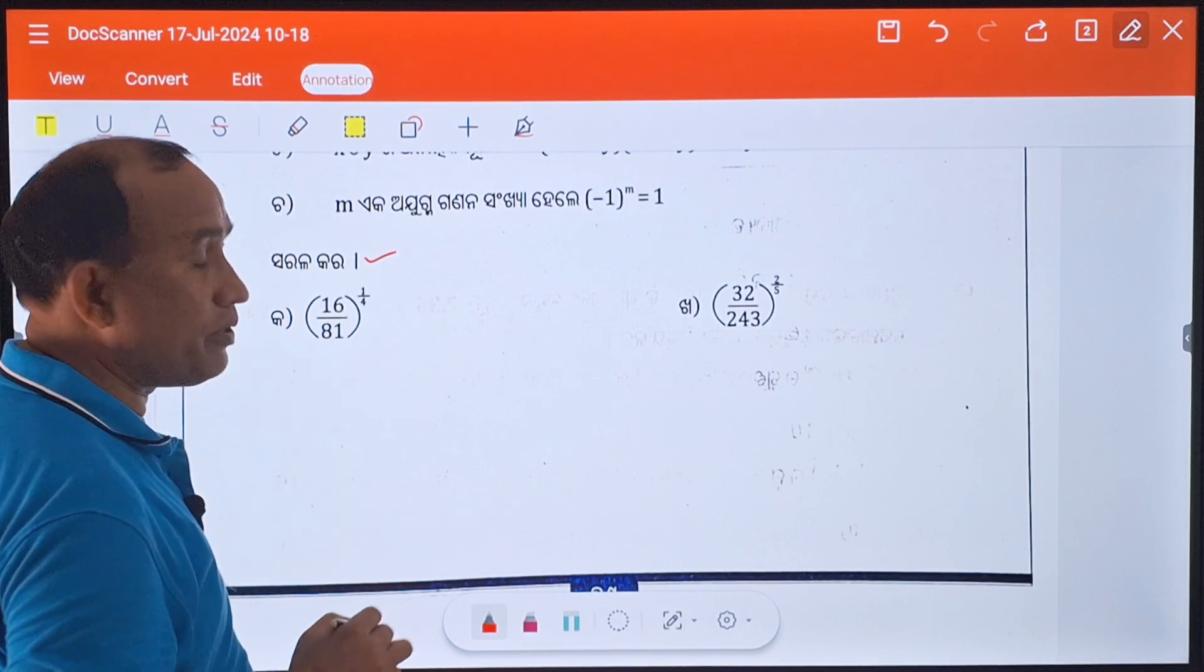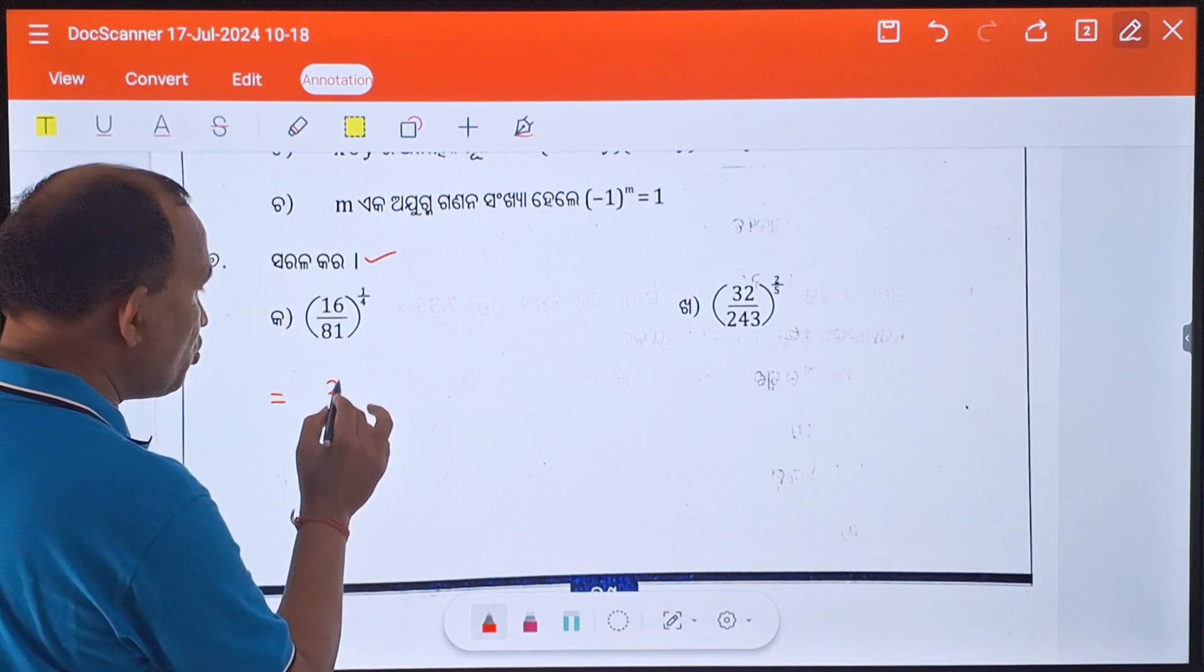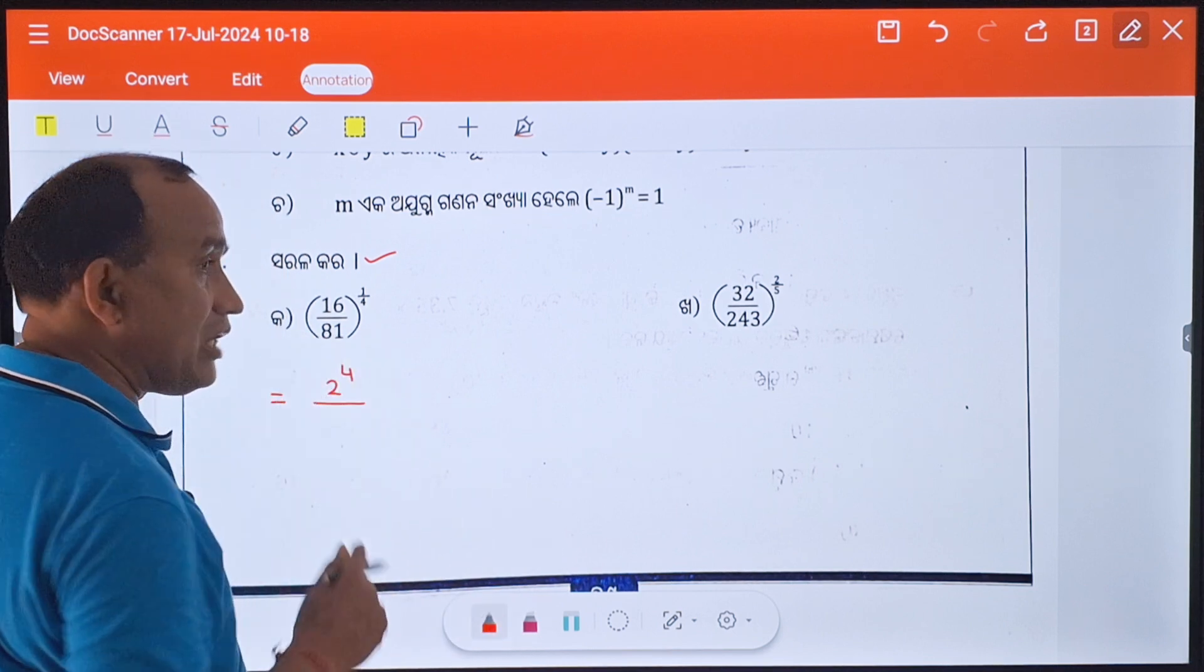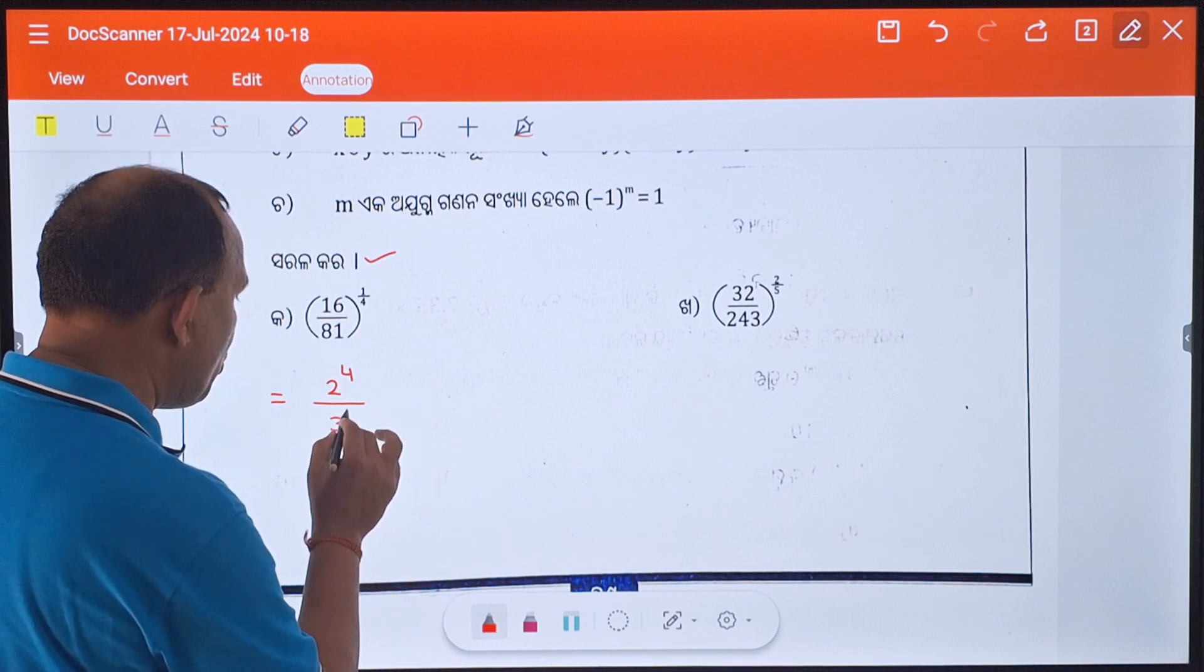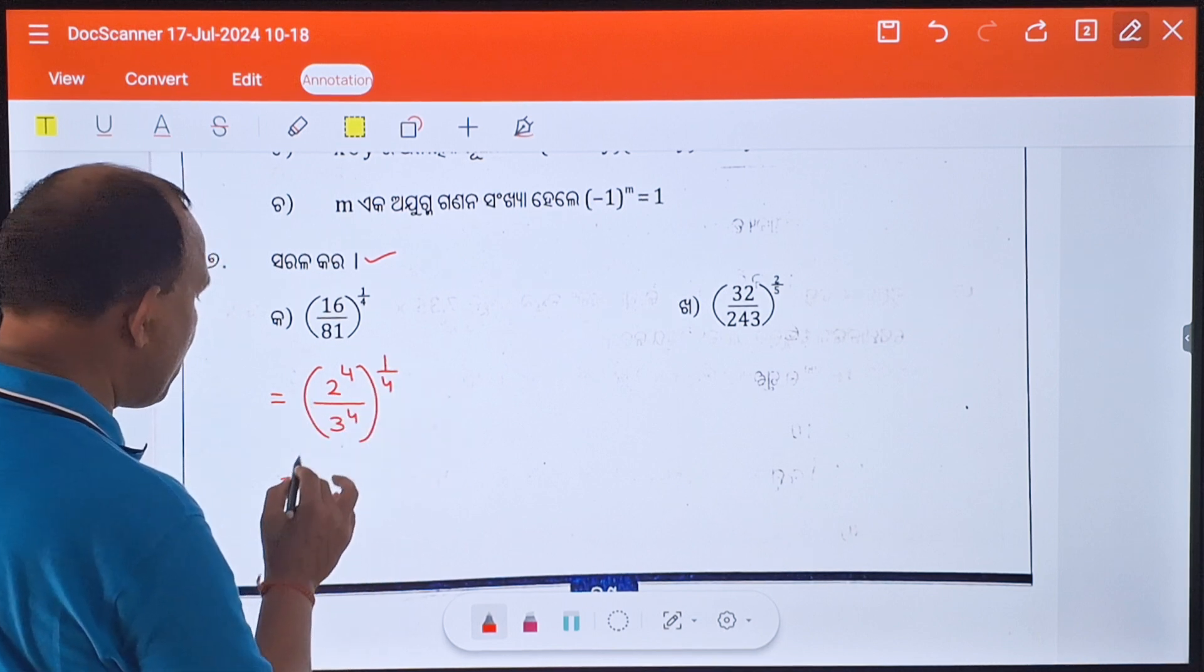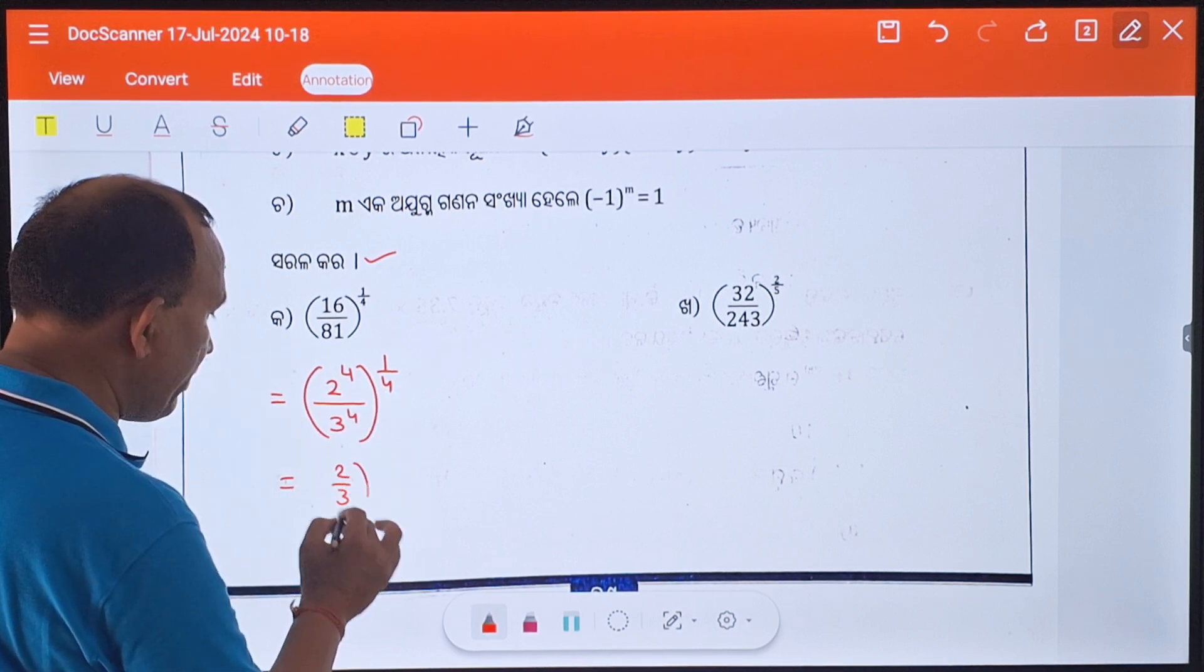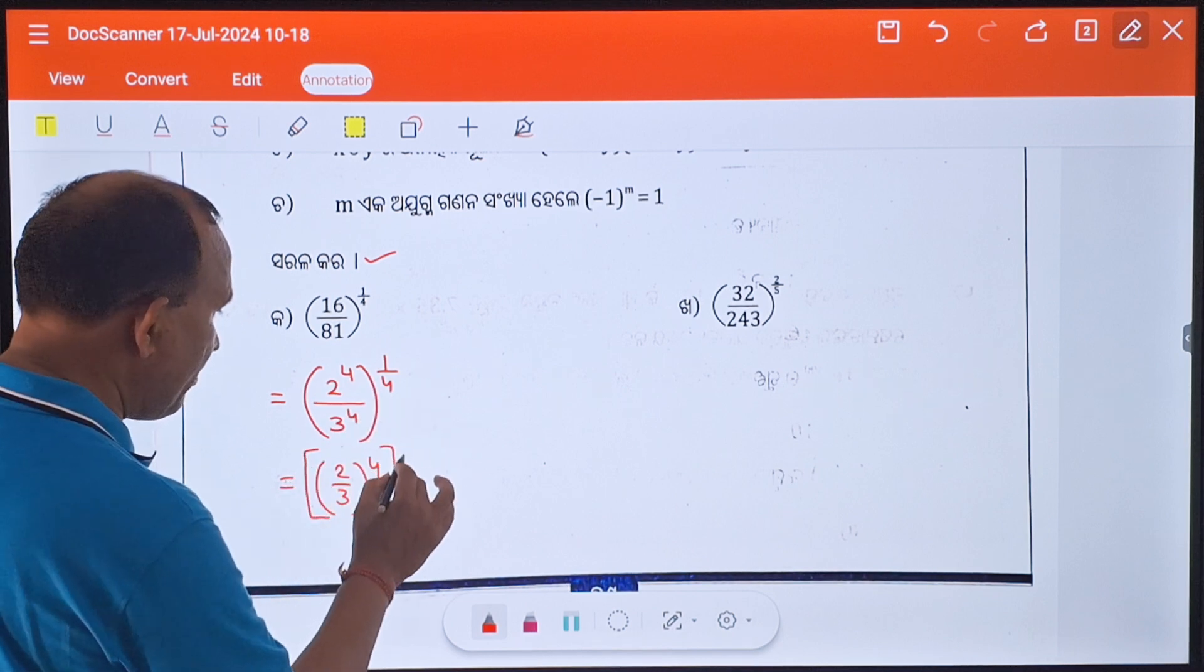Which is 81 whole to the 1 by 4. So where are we? 3 whole to the power of 4 and this is the whole to the power of 1 by 4.